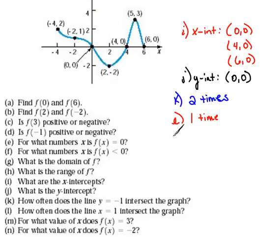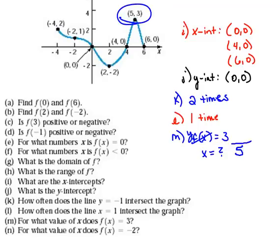Okay. Part m says, for what value of x does f(x) equal 3? So here they've given us f(x) equals 3, and they want to know what is x. Well, f(x), if you'll remember, is just a fancy way of saying y. So in this case, they've given us a y value of 3, and they want us to find the x that goes with that. Well, there's only one point here that has a y value of 3, and that would be this point right here. So our x value would have to be 5.